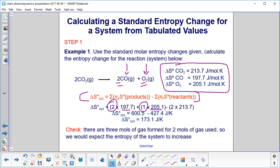Then we subtract out the reactants, which is just carbon dioxide. So there's two of them, here's the two, and that's 213.7. You do the math, and yes, we do find an increase in the entropy, just as we had predicted.